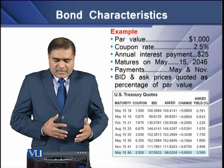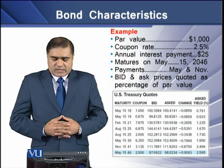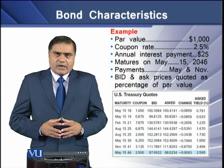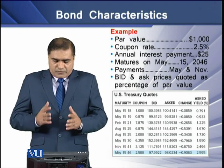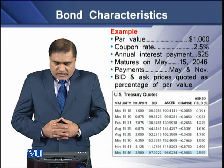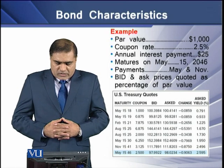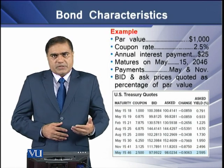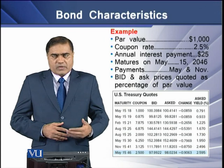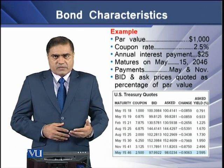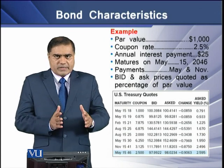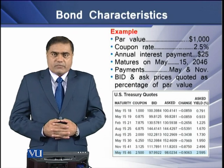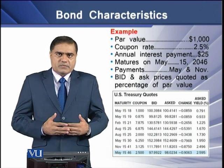There are bid and ask prices that are quoted as a percentage of the par value. As shown on screen, the table displays all these features: maturity, coupon interest, bid price, and ask price — all based on a percentage of the bond's par value. There is also a change column showing the difference.